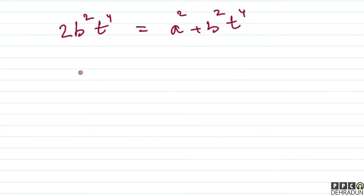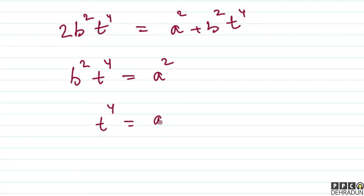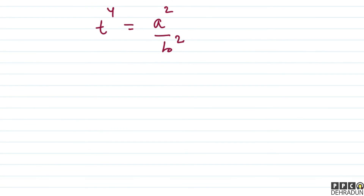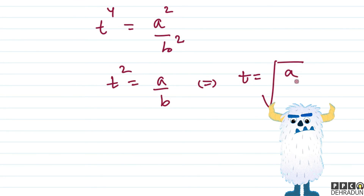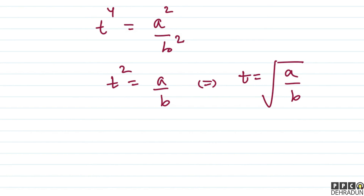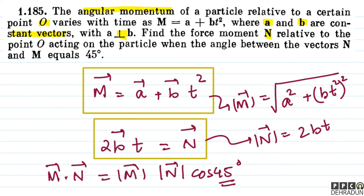तो यहाँ से: 2b²t⁴ equals a² + b²t⁴, जिससे b²t⁴ equals a²। तो t⁴ equals a²/b², और यहाँ से t squared equals a/b। इसलिए t equals under the root of (a upon b)।